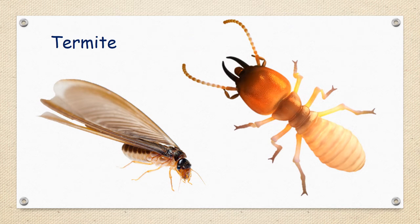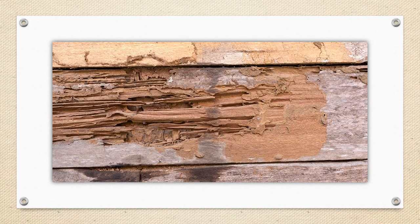Termites. You can see the termite on the right doesn't have wings, but the one on the left does. Do you think a termite is a friend or a foe? Bear in mind these guys are actually very, very small. This picture shows some of the damage that termites can do to a piece of wood. If you have a colony of thousands of them living in a structure, they can be very harmful, especially if that building is made out of wood. That makes them our foe.